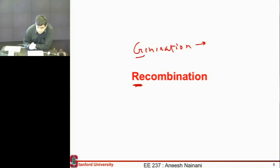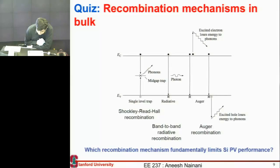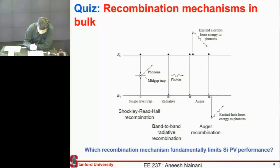Today I want to dwell on recombination a little more — what are the different possible mechanisms and which one dominates in which kind of situation. We talked about previously, when describing the Yablonovitch limit or the Shockley-Queisser limit, that there are different recombination mechanisms. There is the obvious band-to-band recombination, which leads to generation of a photon.